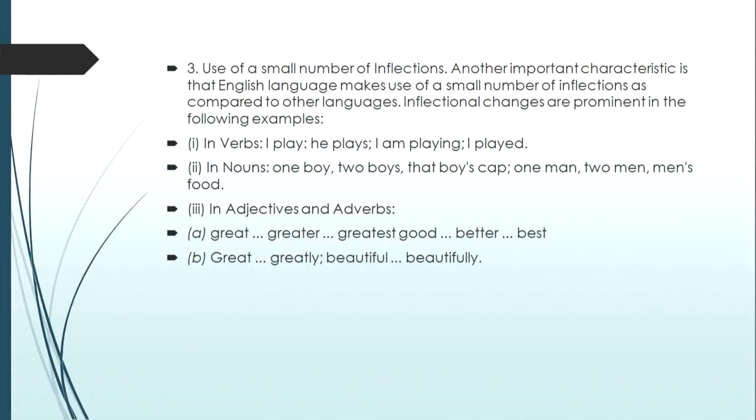The third characteristic is the use of a small number of inflections. Inflections are word parts which do not hold any meaning independently, but when added to a verb or noun they enhance or add a different meaning. For example, 'plays' — the addition of 's' refers to present tense. 'Played' — the addition of 'ed' as a suffix indicates past tense. 'Playing' indicates present continuous tense. Inflections can also tell about number — like two boys, that particular boy, a man, two men. These apply to nouns.